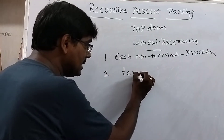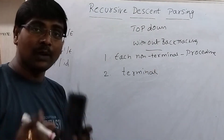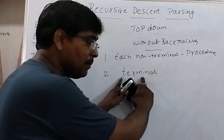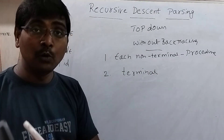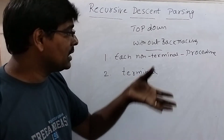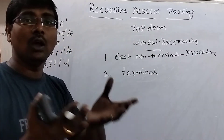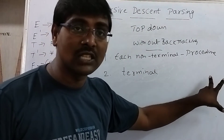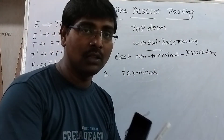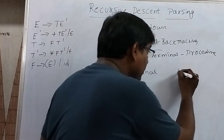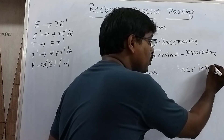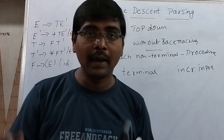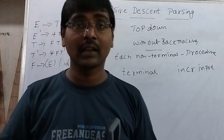If it is a terminal, you have to compare that terminal in the production with the input string. Our aim is, from the given grammar, to generate some input string. If the terminal matches with the input symbol, then increment the input pointer. Whenever there is a matching, you have to perform comparison with the next character in the input symbol.